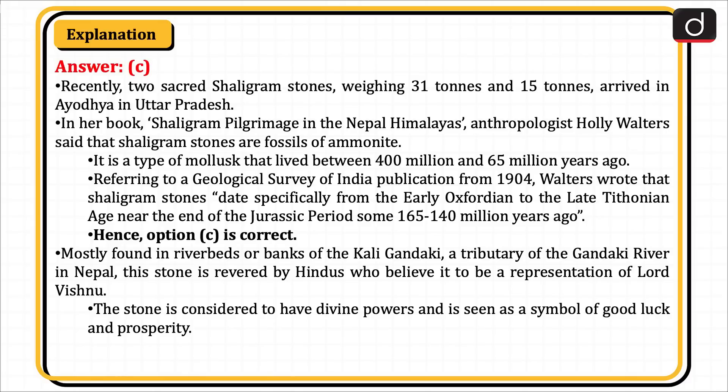Hence, option C is correct. Mostly found in riverbeds or banks of the Kali Gandaki, a tributary of the Gandaki River in Nepal, this stone is revered by Hindus who believe it to be a representation of Lord Vishnu. The stone is considered to have divine powers and is seen as a symbol of good luck and prosperity.